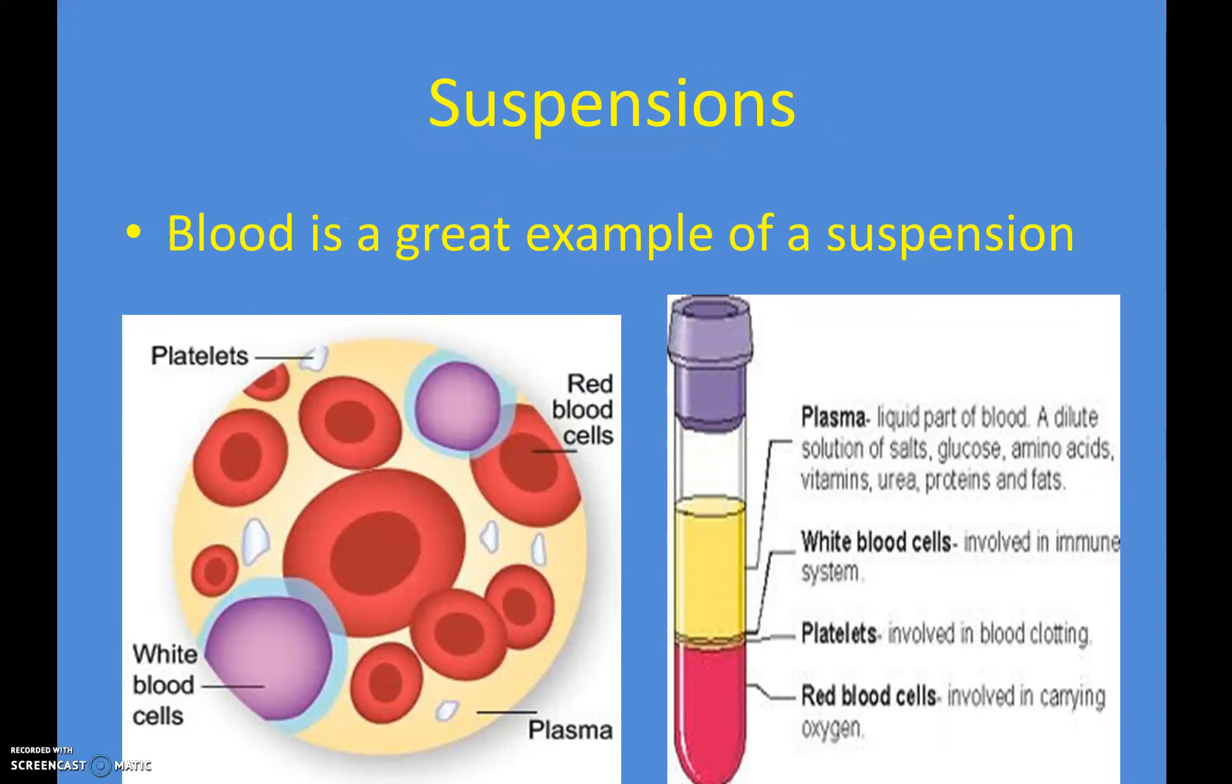Blood is a really good example of a suspension. If you were to take blood and put it into a tube like this and put it into a centrifuge, which is a machine that would spin it, the things that are very dense would go down to the bottom and the things that aren't as dense would stay up at the top. You'd see that this part called plasma, that's the watery part of our blood. In this picture, this yellow here is the base of the blood.